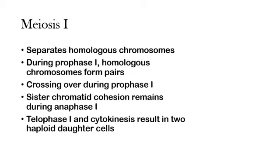Meiosis is split into two mini-phases known as meiosis I and meiosis II. Each of these phases resembles mitosis in that it has the prophase, the metaphase, the anaphase, and all that. Each of these will be known as either one or two with Roman numerals. We're going to start with meiosis I because, of course, it occurs first.